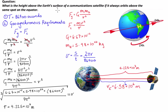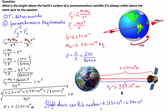To find the height of the communications satellite above the Earth's surface, we take the total distance between the two centres of mass — 4.225 times 10 to the 7 — and subtract the radius of the Earth. That gives us 3.59 times 10 to the 7 meters, or 35,900 kilometers. That's my take on the classical geosynchronous satellite problem.